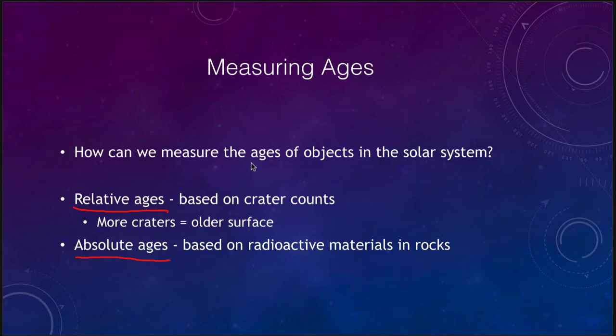There are a couple of ways we can determine how old objects are in the solar system — by looking at them or by getting samples of them. Relative ages are determined by looking at the object; you don't need a sample of anything, and it's essentially based on superposition. If something is on top of something else, the thing on top must be more recent. So if you see craters and one crater is on top of another, the crater on top is the one that must have formed more recently.